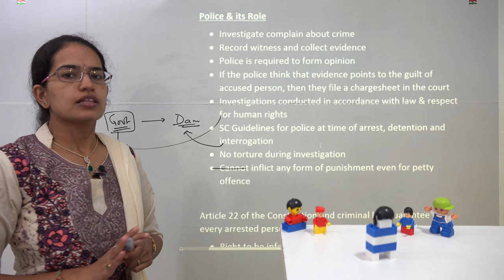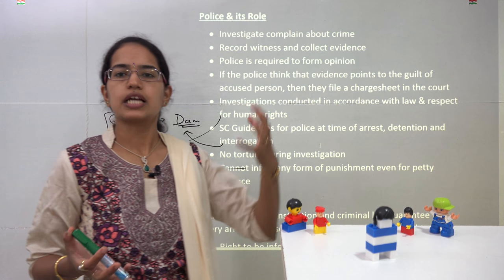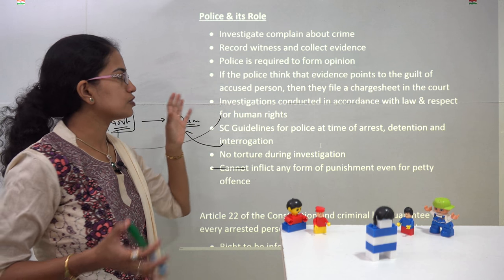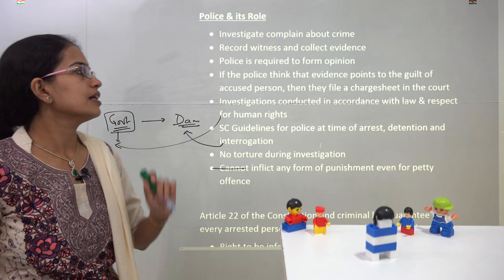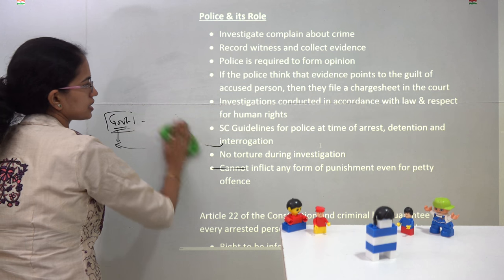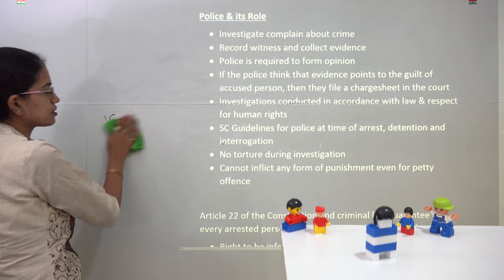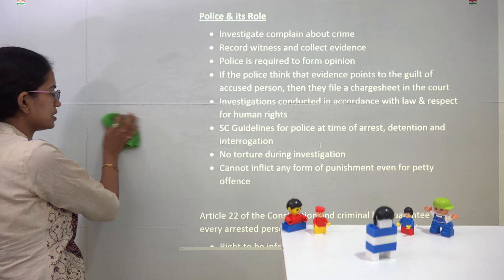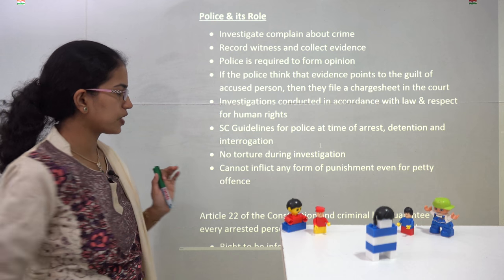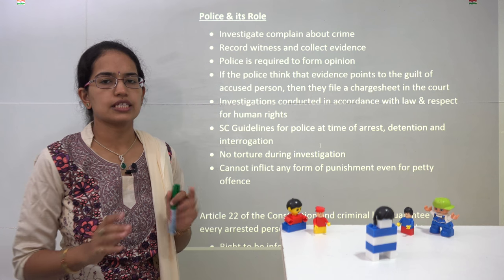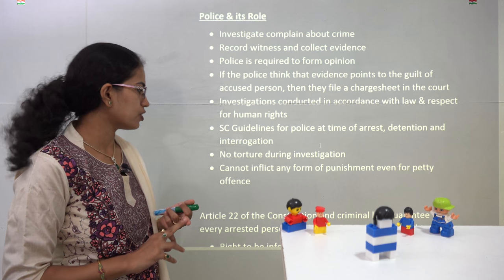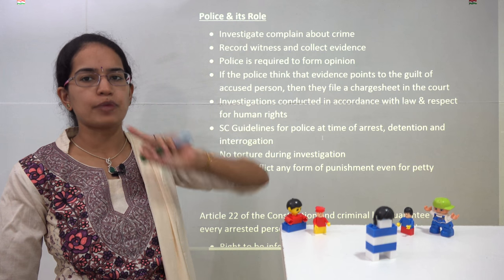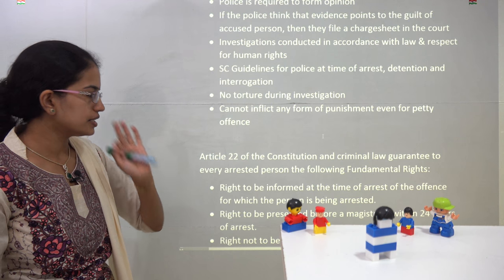What is the role of police? Police are the witness — they collect evidence, register complaints, and form an opinion. If the police think the evidence points to the guilt of an accused person, they can file a charge sheet. That charge sheet goes for investigation. Under Supreme Court guidelines, police must explain the time of arrest, detention, and interrogation. However, during investigation, police cannot do any kind of torture or inflict any form of punishment — only the judge can give punishment.